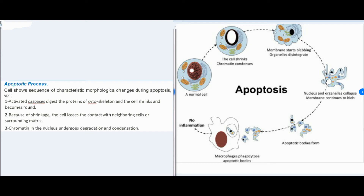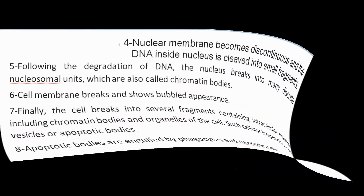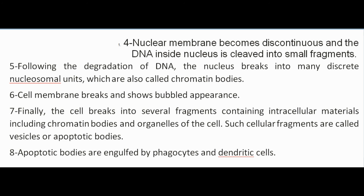The cell shows a sequence of characteristic morphological changes during apoptosis: (1) activated caspases digest proteins of the cytoskeleton and the cell shrinks and becomes round; (2) the cell loses contact with neighboring cells or surrounding matrix; (3) chromatin in the nucleus undergoes degradation and condensation; (4) nuclear membrane becomes discontinuous and DNA is cleaved into small fragments; (5) following DNA degradation, the nucleus breaks into many discrete nucleosomal units called chromatin bodies; (6) the cell membrane breaks and shows a bubbled appearance; (7) finally, the cell breaks into fragments containing intracellular materials, called apoptotic bodies; (8) apoptotic bodies are engulfed by phagocytes and dendritic cells.